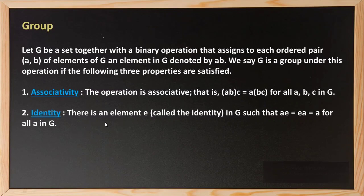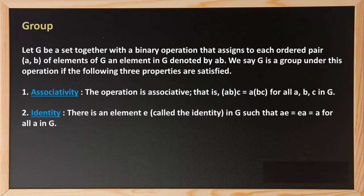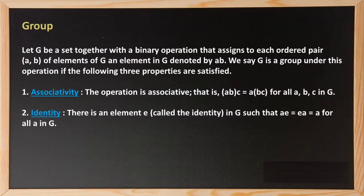For the identity property, there must exist an element E in the set such that operating any element with E gives back the same element. For example, if we are looking at addition, the identity element is zero — because if we take any element, say 1, and add zero to it, we get 1 back. So zero acts as the identity element for addition.